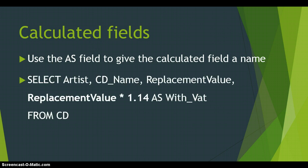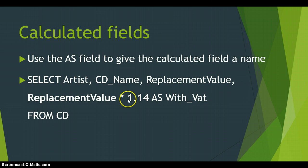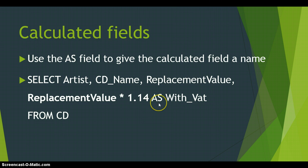Let's start with a simple calculation: working out the VAT on the replacement value. VAT here is 14%, so you take the value and multiply it by 1.14 — 1 being the full value and 0.14 being the 14% extra. Because we are creating a particular field we need to give it a name, and that's where we use the AS keyword to name the field — in this case 'with_VAT'.